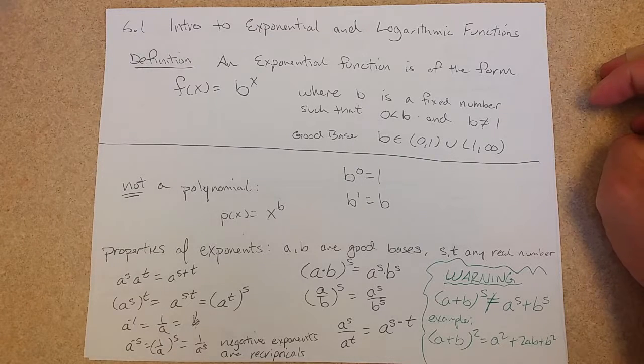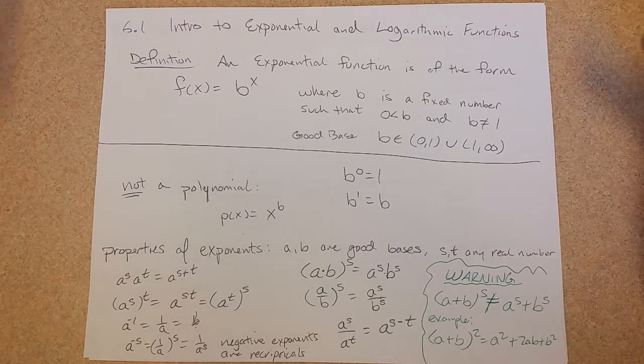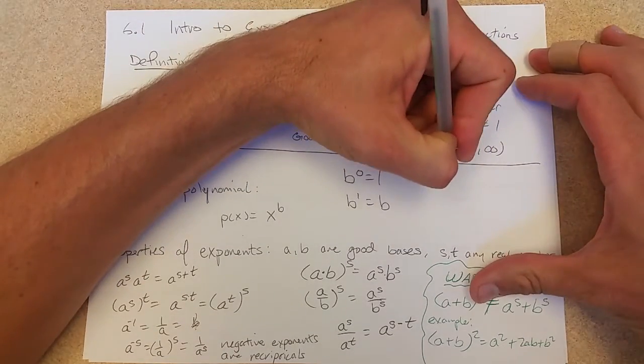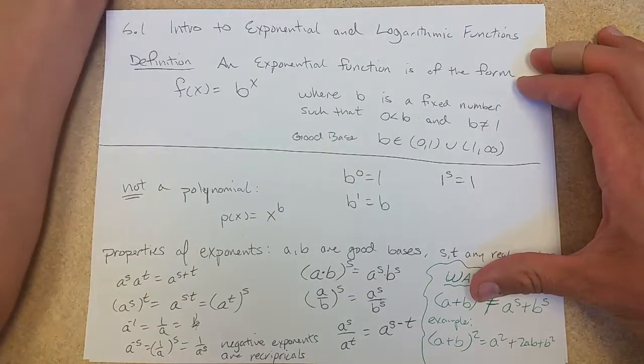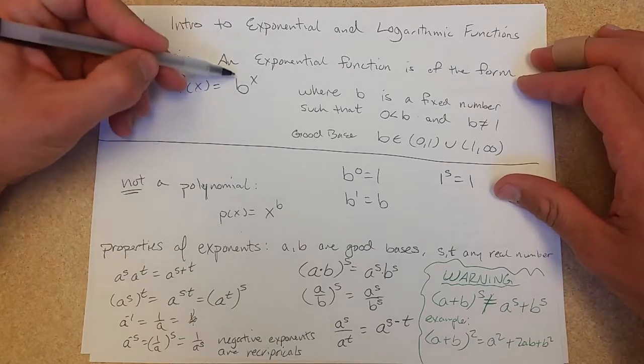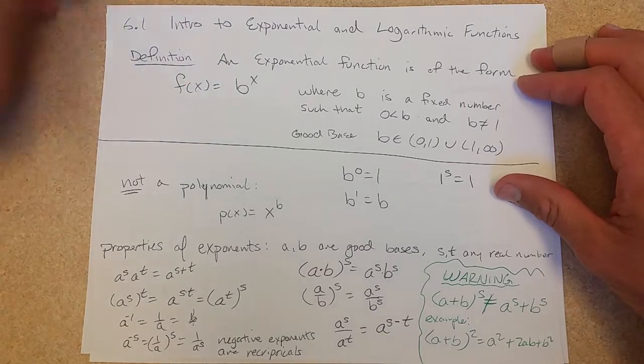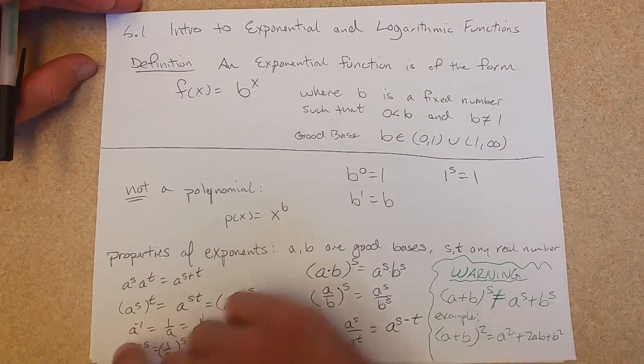Now why do we not want to consider 1? 1 is a little bit boring and the rule for exponents is 1 raised to any power is 1. So it's not very exciting. It's just going to be a constant function if we let this base be 1. And a constant function would just be a line with a slope of 0, so we're going to skip that.